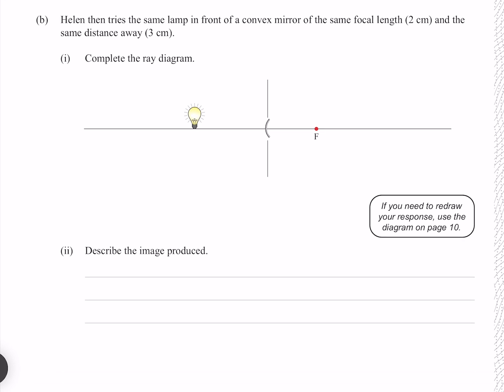Helen then tries the same lamp in front of a convex mirror of the same focal length 2cm and the same distance away 3cm. Complete the ray diagram.